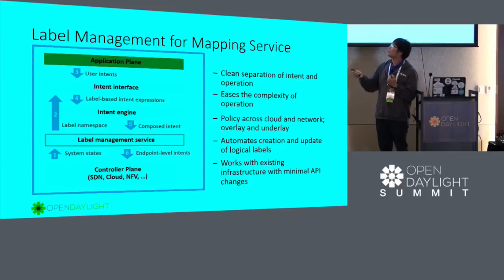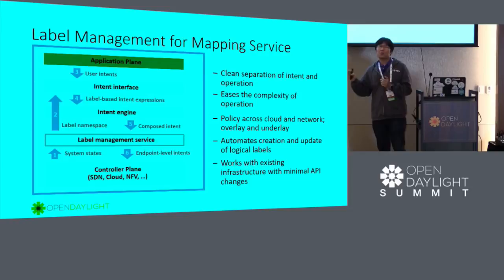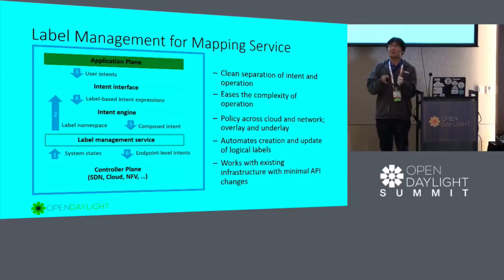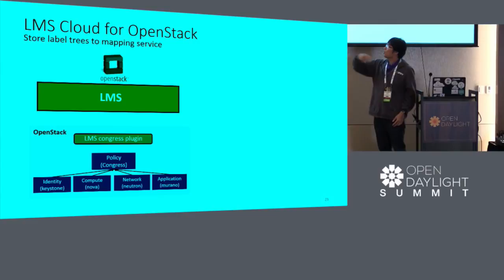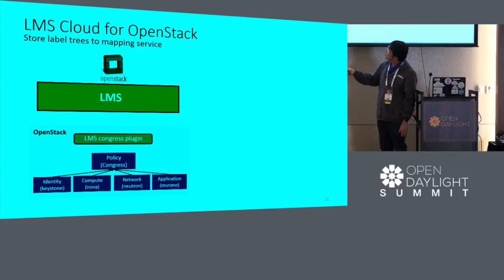Currently we have a learning prototype under OpenStack. We have implemented LMS in one of the OpenStack plugins. We are using the OpenStack Congress service for collecting all possible information from different services in OpenStack. Congress is a policy management service in OpenStack that manages all different services available. We can give the label tree definitions without specifying any details about how to get this information from the infrastructure. We assume that a cloud admin or expert can define these values - for example, an available zone.